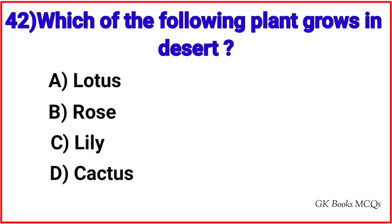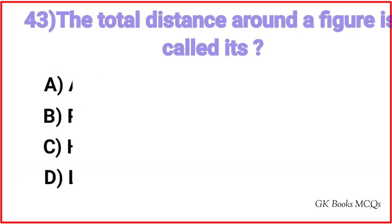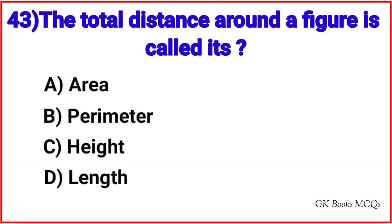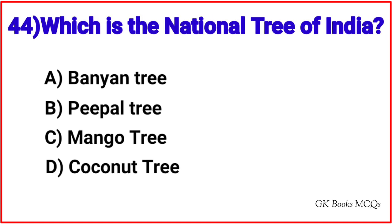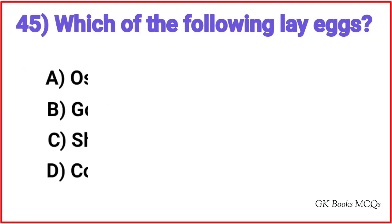Question 42: Which of the following plant grows in desert? Correct answer is option D, Cactus. Question 43: The total distance around a figure is called its? Correct answer is option B, Perimeter. Question 44: Which is the national tree of India? Correct answer is option A, Banyan tree.